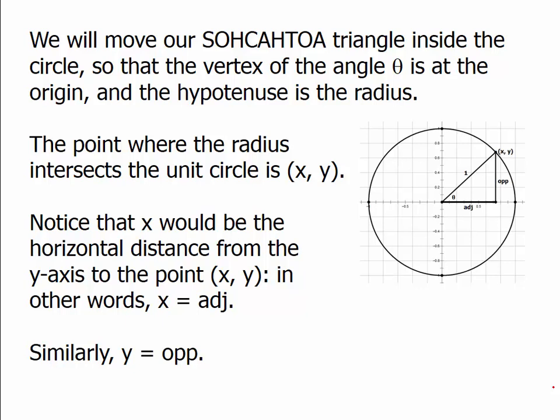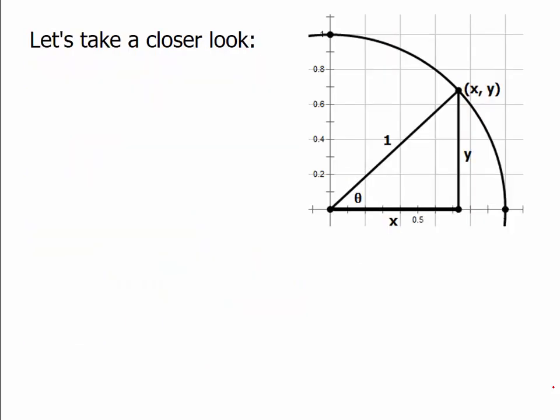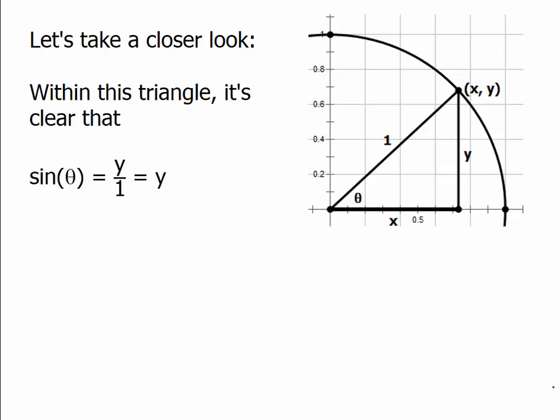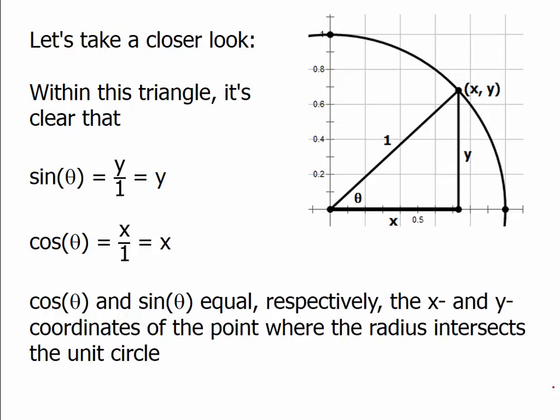Something really important is happening here. Since the hypotenuse is 1, sine — opposite over hypotenuse — equals y over 1, which is just y. Cosine — adjacent over hypotenuse — equals x over 1, which is just x. So sine equals y and cosine equals x. Sine and cosine equal, respectively, the y and x coordinates of the point where the radius intersects the unit circle. This is the unit circle definition of sine and cosine.